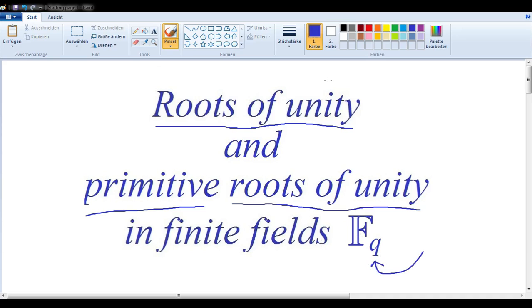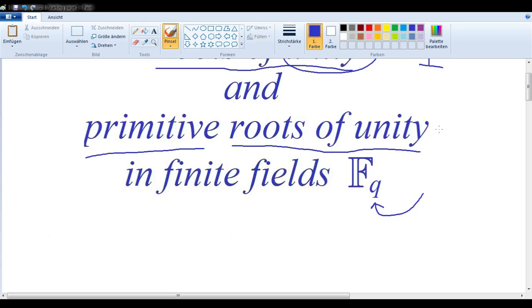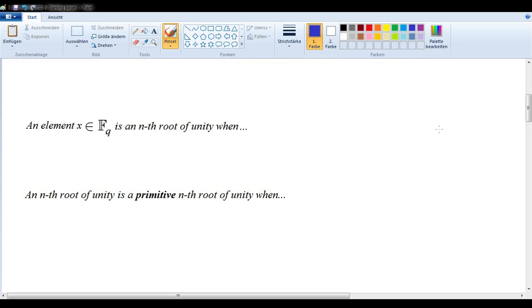Now, if we think about the fact that unity here is just a fancy word for the element 1, then the following definition should make good sense. Notice, an element X in FQ is an nth root of unity when X to the n is equal to 1. In other words, when X to the n is equal to unity.